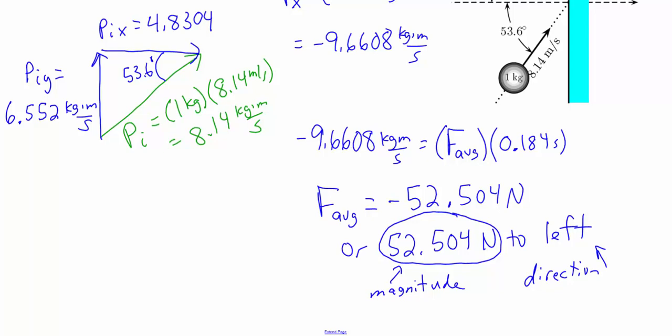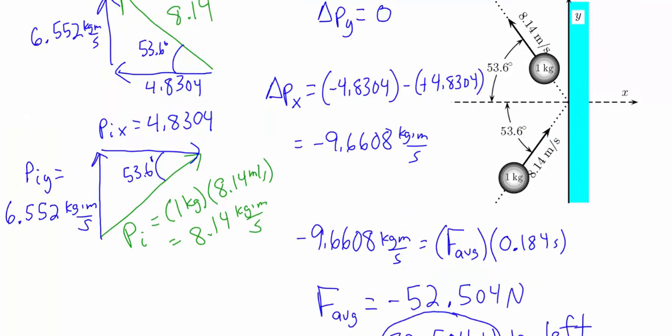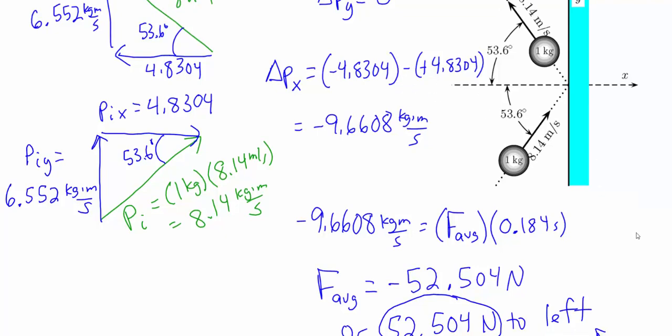The magnitude tells us how big the force is, which is what was asked for. The negative sign confirms the wall pushed to the left on the ball, making it bounce off to the left — consistent with the diagram. These two problems are simple examples relating force and impulse: using the change in momentum to find the force acting on an object if we know the time, or using a known force to calculate how long it acted.